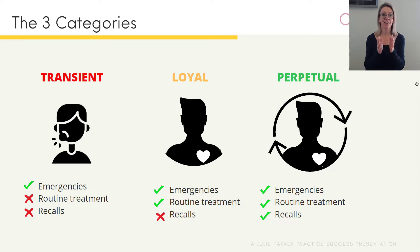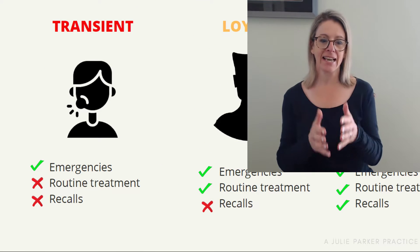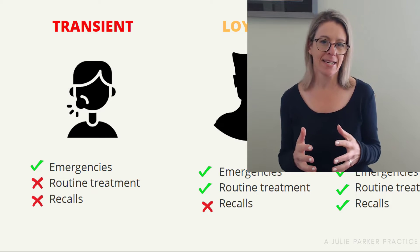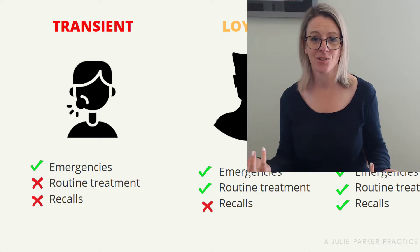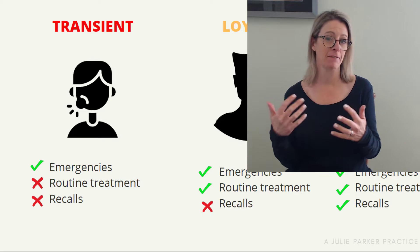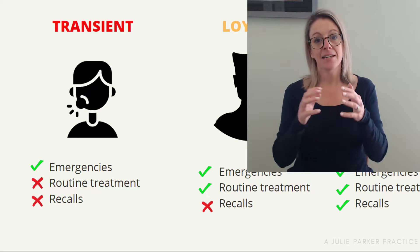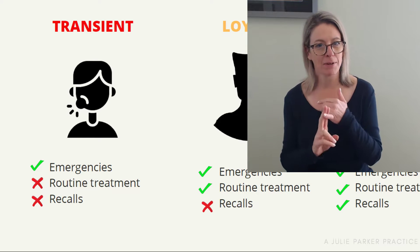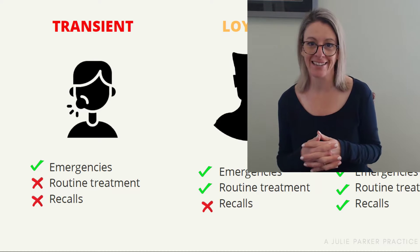The three categories are the transients, the loyals, and the perpetuals. First, the transients. Transients come in for emergencies and are usually not regular attendees. You can often tell a transient on the phone — they might say things like, 'I haven't been to the dentist for 15 years,' or 'I've had this toothache on and off for five years,' or 'this broken tooth has been around since my first marriage.' You can often tell within that initial call that this patient may be a transient.